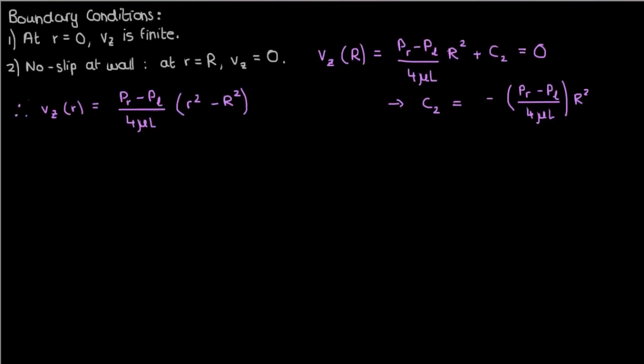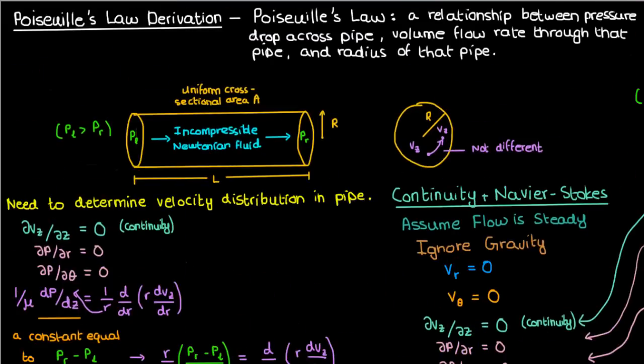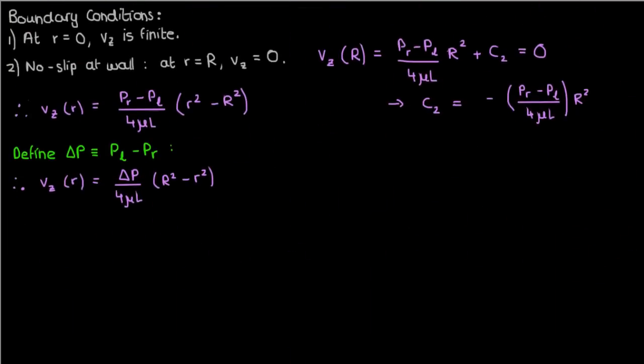What I'm going to do now is define a parameter delta P as PL minus PR, in which case this is what my velocity profile equation will look like. Now how do we take this velocity profile and come up with Poiseuille's Law from that? Well, I mentioned at the start that Poiseuille's Law is a relationship between the pressure drop, the volume flow rate, and the radius of the pipe. So let's use our velocity profile to calculate the volume flow rate of the fluid through the pipe.